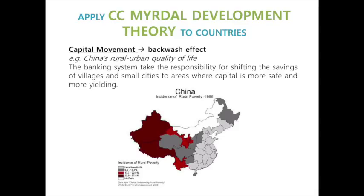Although the outflow of rural funds has increased due to the loans from banks, the banking system only returned a fraction of the deposits back into the original agricultural sector throughout the period. Therefore, as a result of the backwash effect on capital mobility, large cities such as Beijing will become more developed while small cities and villages in Guizhou become poorer.